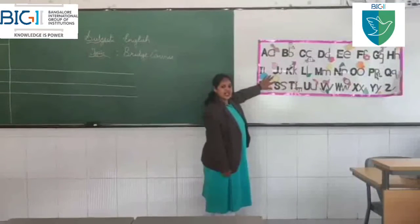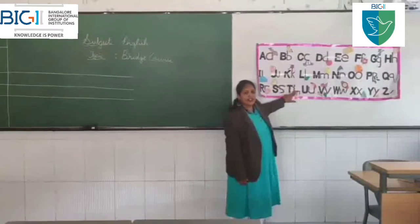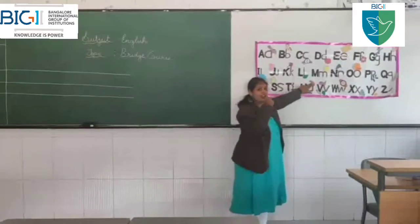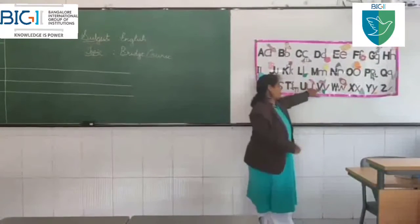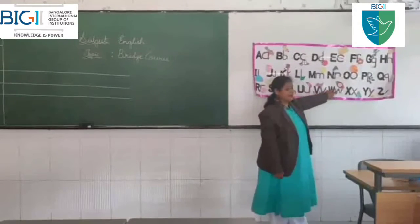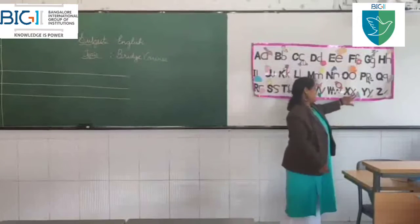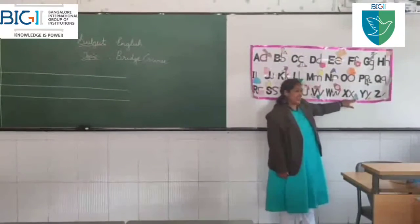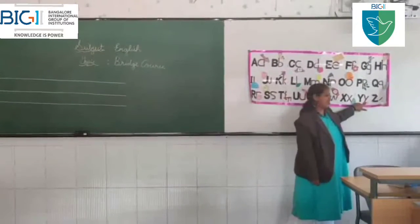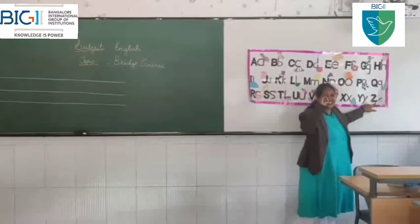S is for sun. T is for table. U is for umbrella. V is for vegetables. W is for watch. X is for xylophone. Y is for yellow. Z is for zero.